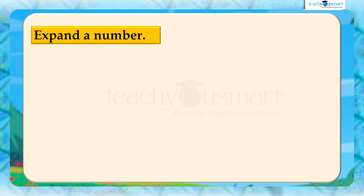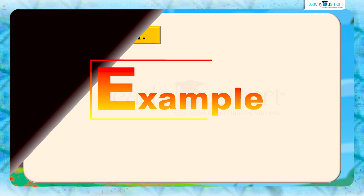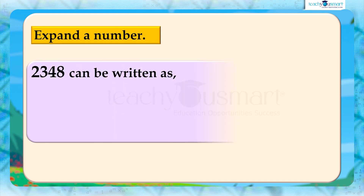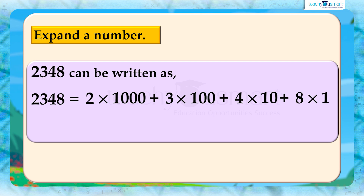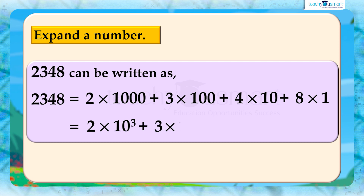We already know how to expand a number, including decimal numbers. For example, 2,348 can be written as 2 multiplied by 1,000 plus 3 multiplied by 100 plus 4 multiplied by 10 plus 8 multiplied by 1. In exponential form: 2,348 equals 2 multiplied by 10 cube plus 3 multiplied by 10 square plus 4 multiplied by 10 raised to 1 plus 8 multiplied by 10 raised to 0.